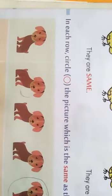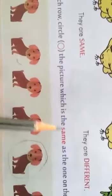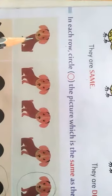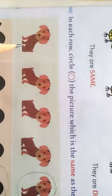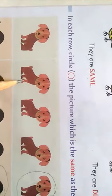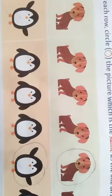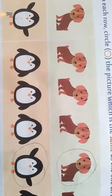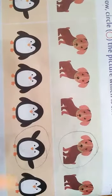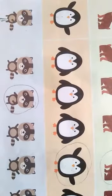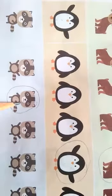Now we study the question. In each row, circle the picture which is the same as the one on the left. Look at the first picture — this doggy. Find the same picture. Yes, this one — circle it. Look at the next picture — this penguin. Find the same picture. Yes, this one — circle it. Look at the cat and find the same one. Yes, this — put the circle.